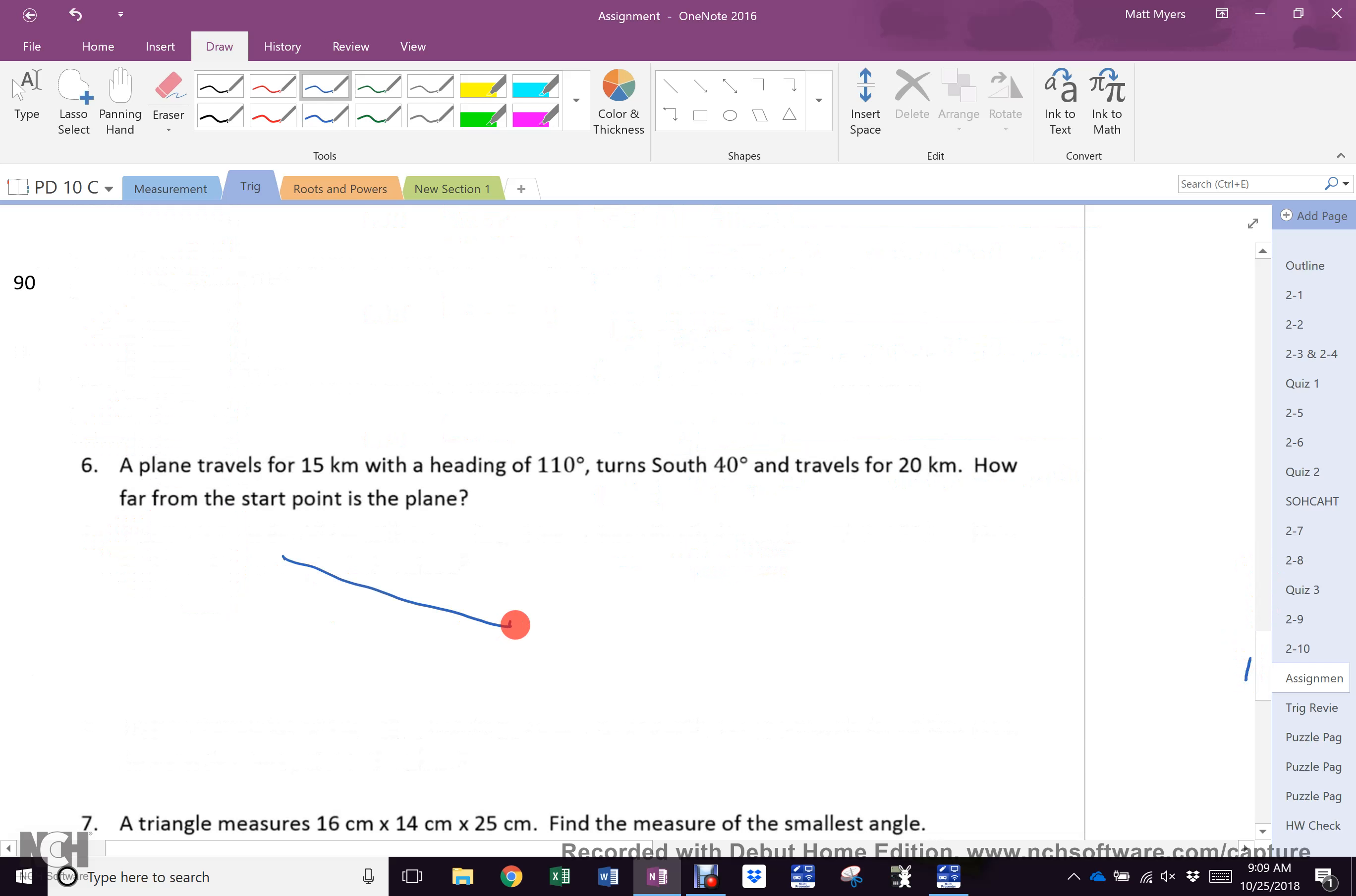The plane. We already have drawn this many times. We know this is 20. We know this is 15. We know this is 140. So, this is, again, c equals the square root of 15 squared plus 20 squared minus 2 times 15 times 20 times cos 140. And that equals 35.8.